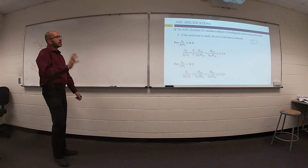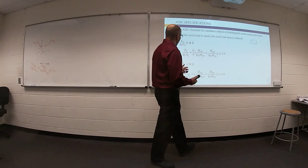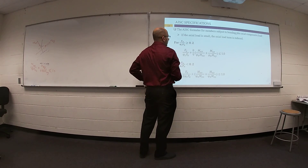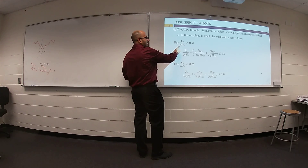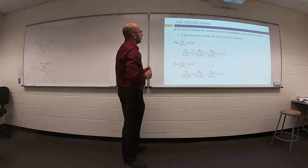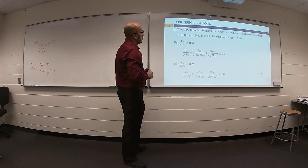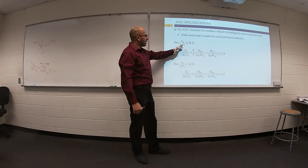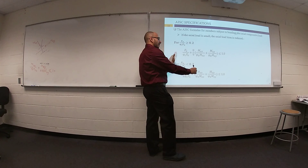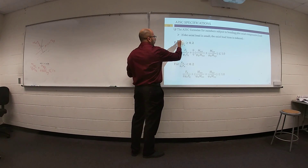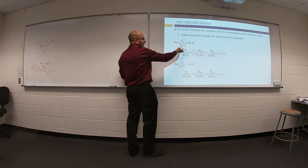For the standard AISC, we'll use the same equation but with a small change. If the axial load is large — if you divide P-ultimate by the design compressive strength and you find this value greater than or equal to 0.2 — then the second term will be okay, but multiplied by 8/9, because your axial compression is large.